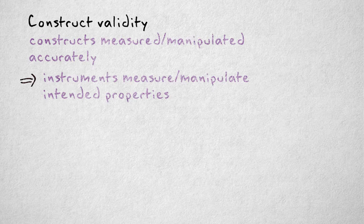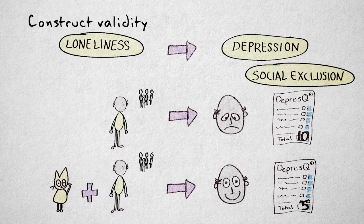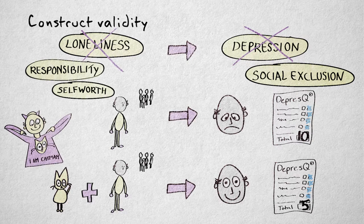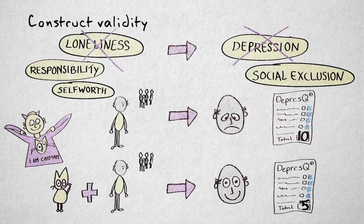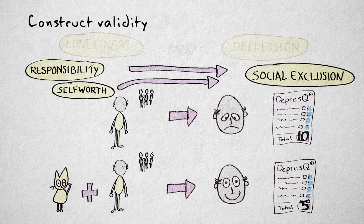Suppose I accidentally measured an entirely different construct with, for example, my depression questionnaire. What if it measures feelings of social exclusion instead of depression? Or suppose that taking care of the cat didn't affect loneliness at all, but instead increased feelings of responsibility and self-worth — what if loneliness remained the same? Then the results only seem to support the hypothesis that loneliness caused depression, when in reality we've manipulated a different cause and measured a different effect.